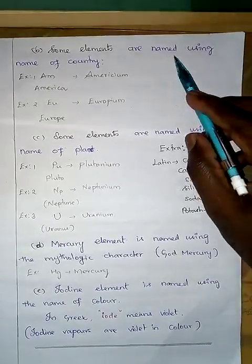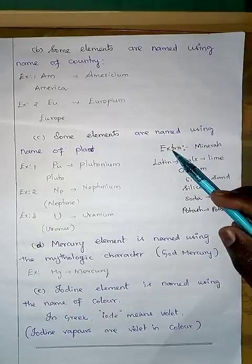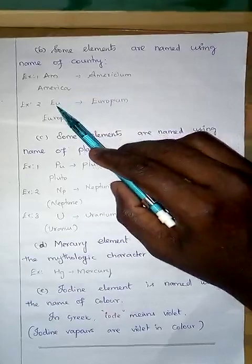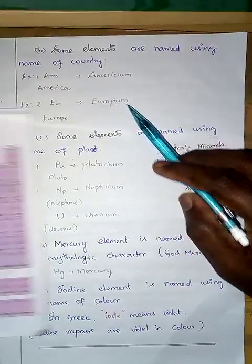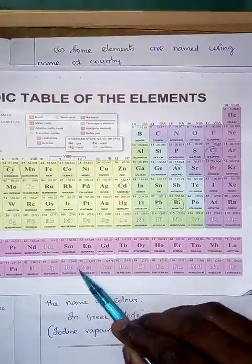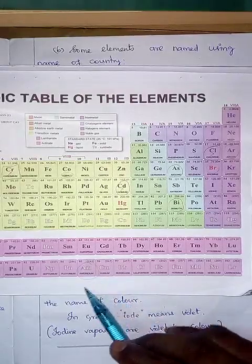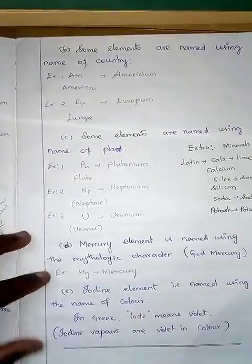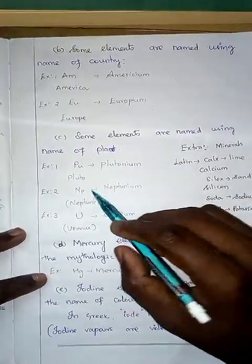Some elements are named using the name of a country. Examples are americium, named after America, and europium, named after Europe. You will find these in the periodic table.